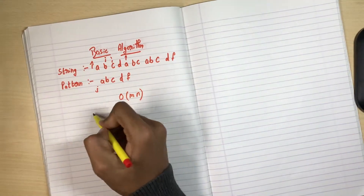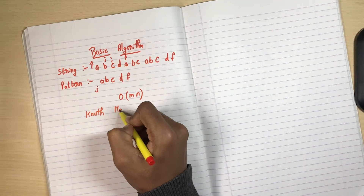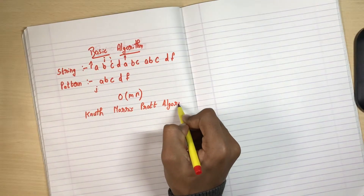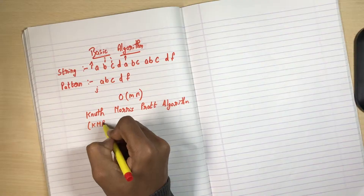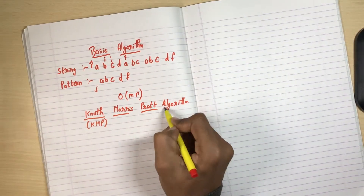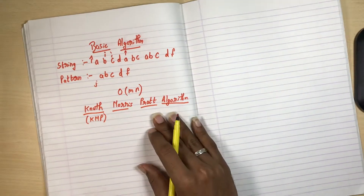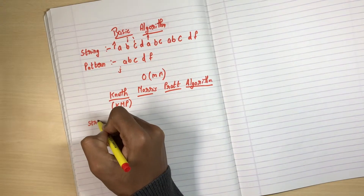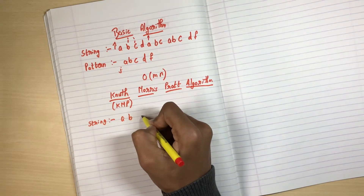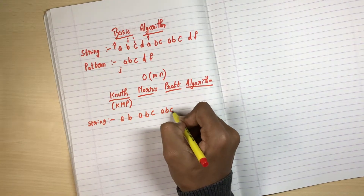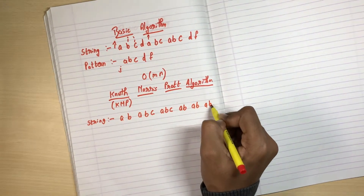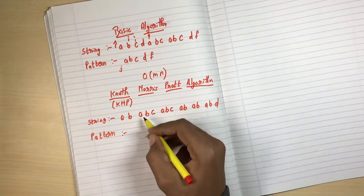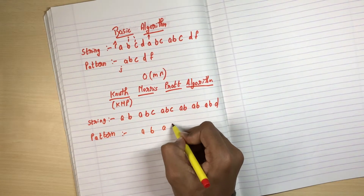Now I will show you the Knuth-Morris-Pratt algorithm, also called KMP. The given string here is: A, B, A, B, C, A, B, C, A, B, A, B, A, B, D. The given pattern is: A, B, A, B, D.